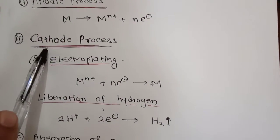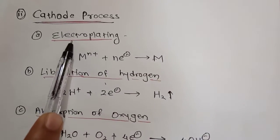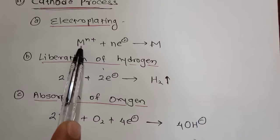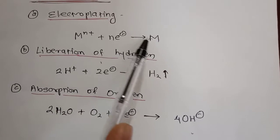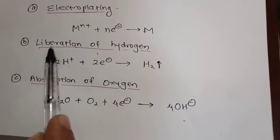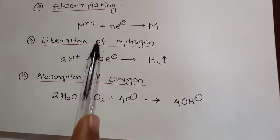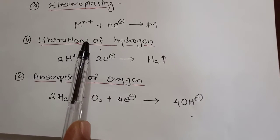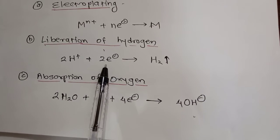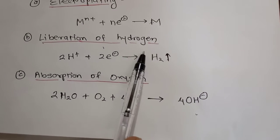At cathode, three reactions will take place. The first is electroplating — the metal cation which we have generated will consume electrons and convert back to metal. The second reaction is liberation of hydrogen. This liberation of hydrogen usually takes place in an acidic medium, where H+ will consume electrons and form H2.